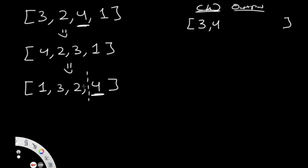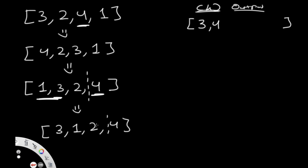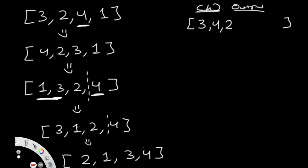From now on we only include everything to the left of that imaginary line, which is [1, 3, 2]. The largest value is 3, so we move it to the beginning by reversing those two elements — getting [3, 1, 2, 4] at a k value of 2. Then we reverse everything to the left of the imaginary line, which is [3, 1, 2], giving us [2, 1, 3, 4] at a k value of 3. Now both 4 and 3 are in their correct places, so we move the imaginary line.